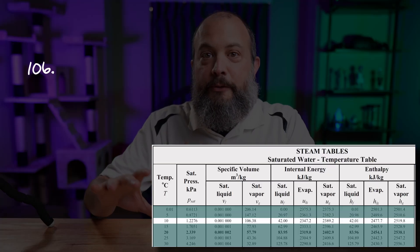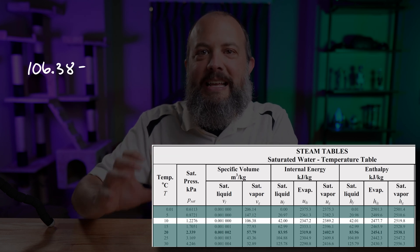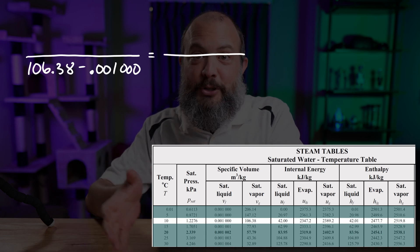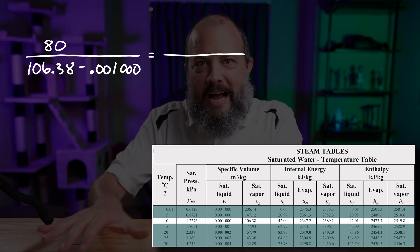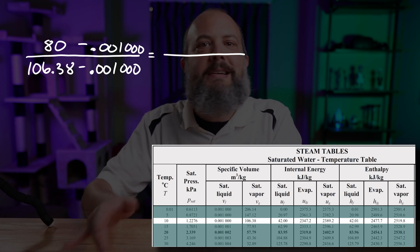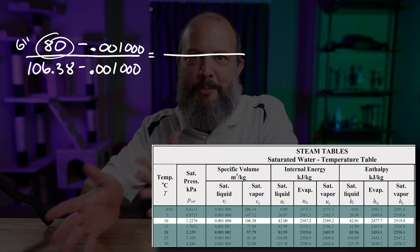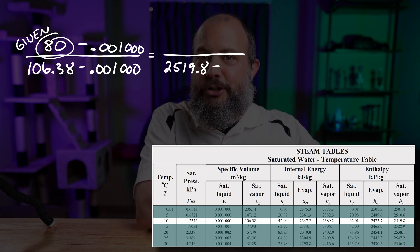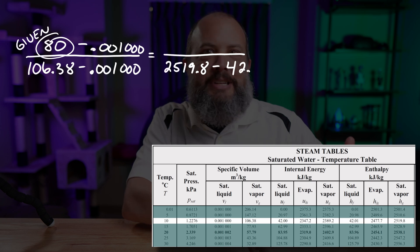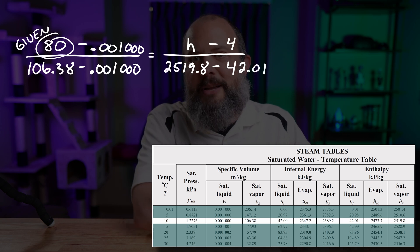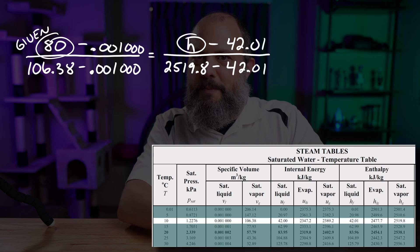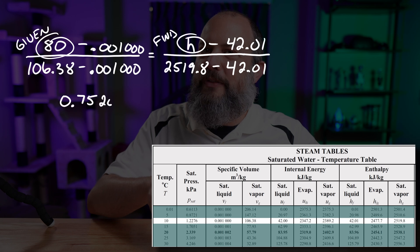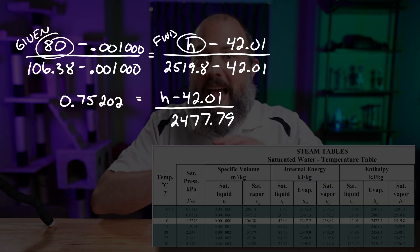Back to the fractions. The first fraction is the one we are given: 80 meters cubed per kilogram, which at 10 degrees Celsius falls in between the totally liquid and totally gas values. The denominator is the total range that my number is in between, and the numerator is just my partial range from the smaller number up to 80. The second fraction is for enthalpy: the denominator is the total range at 10 degrees Celsius from completely liquid to completely vapor, and the numerator is the partial range up to my value. A little algebra and calculator work gives me enthalpy = 1905 kilojoules per kilogram.